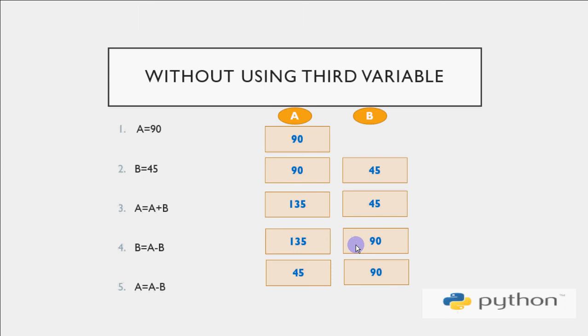So we serve two purposes with the help of this statement. One, I get 90 in B and second is I still have sum of two numbers and one of the number with me, with the help of which I can get the other number. So we write A is equal to A minus B. So here 135 minus 90 is 45. So I get the second number in A and you could see the interchange is done. So A is 45 and B is 90. So values are interchanged without using third variable.